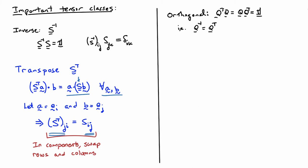Another important category are orthogonal tensors. These have the property that multiplying a tensor Q by its transpose on either side returns the identity. This means the inverse of Q is its transpose. Orthogonal tensors come up frequently in continuum mechanics and are related to rotational motions.